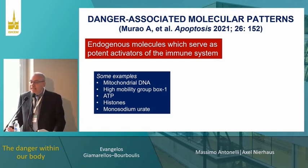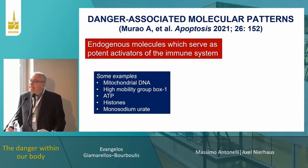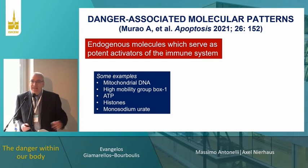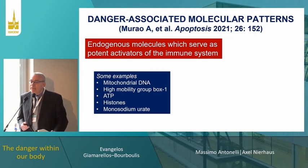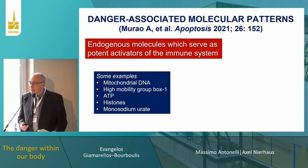These substances include mitochondrial DNA, high mobility group box one (HMGB1) — a typical non-histone protein used for DNA coiling — ATP, and monosodium urate.